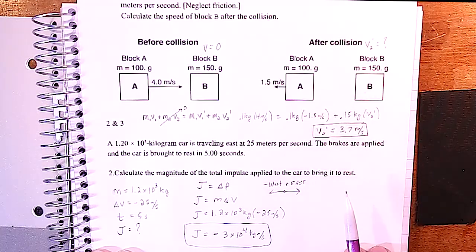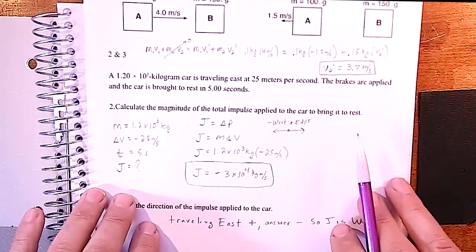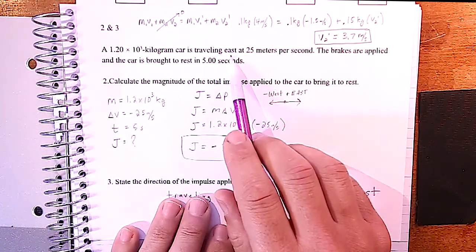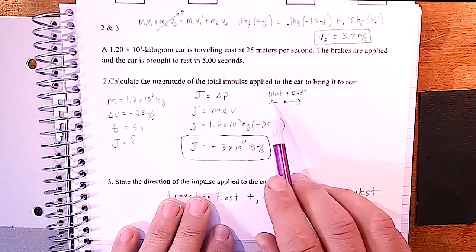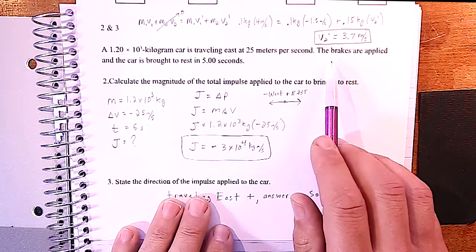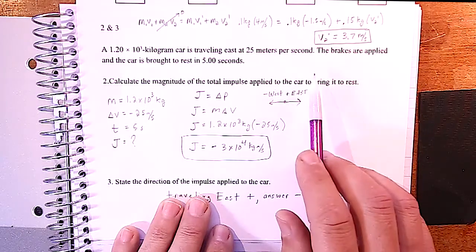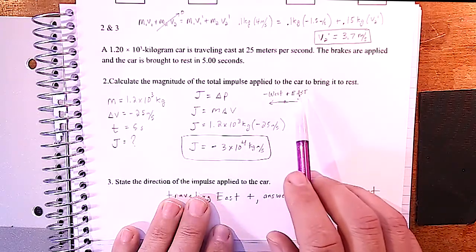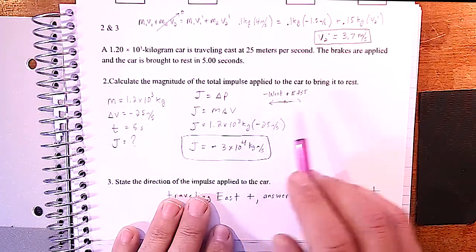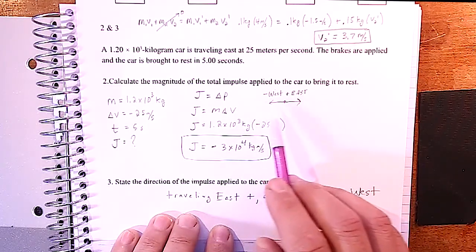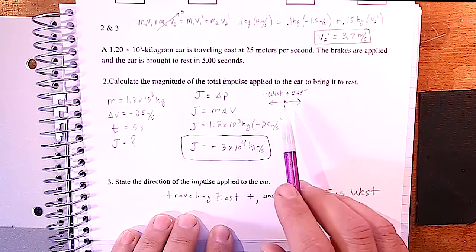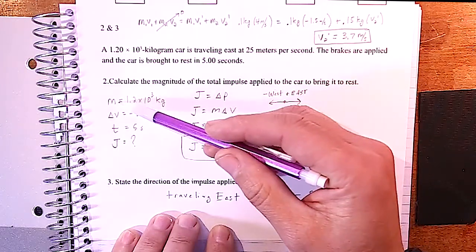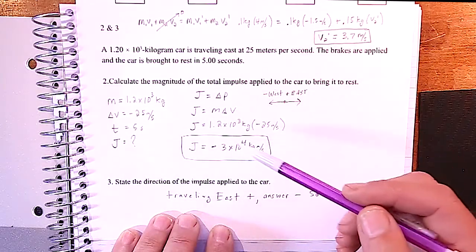In this question we have a car traveling east. I made east positive and west negative. The brakes are applied, which slows the car down. The car was traveling east, so the net force is to the west, and therefore the acceleration and impulse will also be to the west. The best way to do this is to write down our knowns: mass, delta-v, and time.